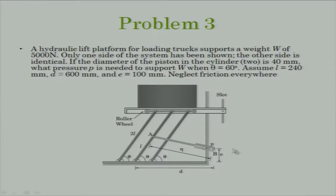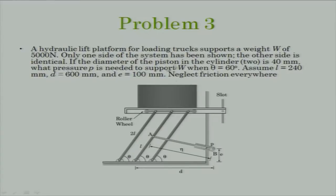This entire assembly is supported by a hydraulic cylinder. All the dimensions are given — this distance, epsilon, everything is known. So in principle, we know the orientation of hydraulic cylinder AB with respect to the horizontal. What we are asked is: given all the dimensions and when theta equals 60, what force must the hydraulic cylinder provide to keep this assembly in equilibrium? The hydraulic cylinder is exerting a force at point A along its direction, and if you know the diameter, P times the area gives the force acting at point A.